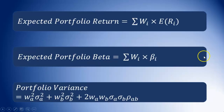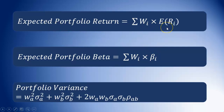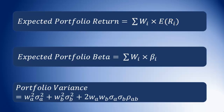So three formulas we're looking at. First, expected portfolio return, which is a weighted average of the returns in the portfolio. It is the individual weight of each asset — the percentage allocation for each asset — multiplied by the return or expected return for that asset.